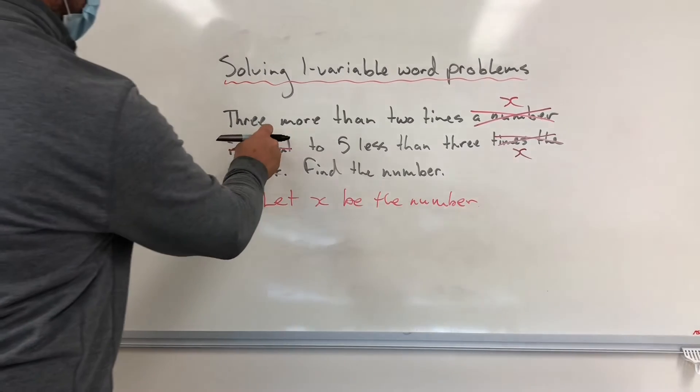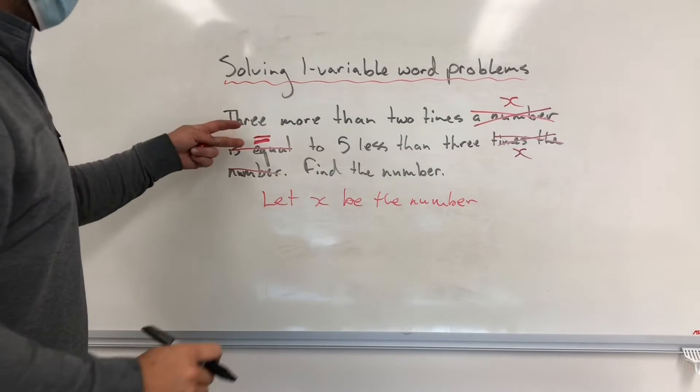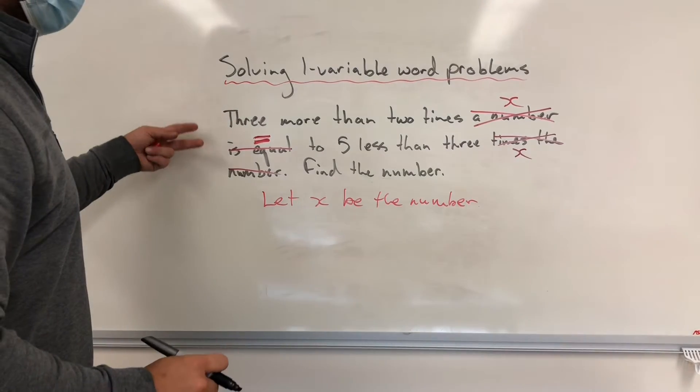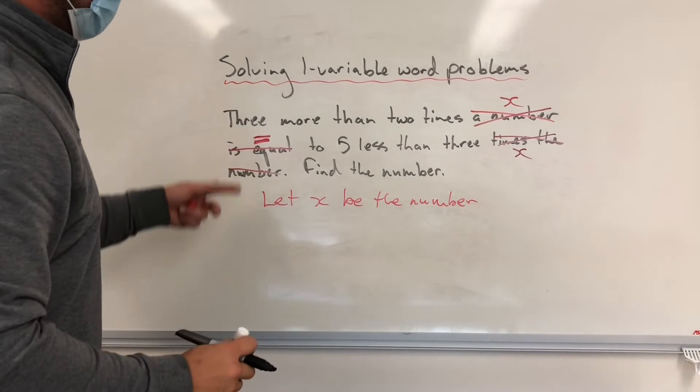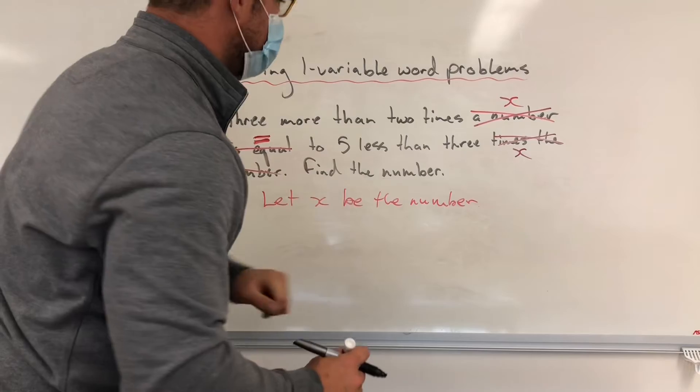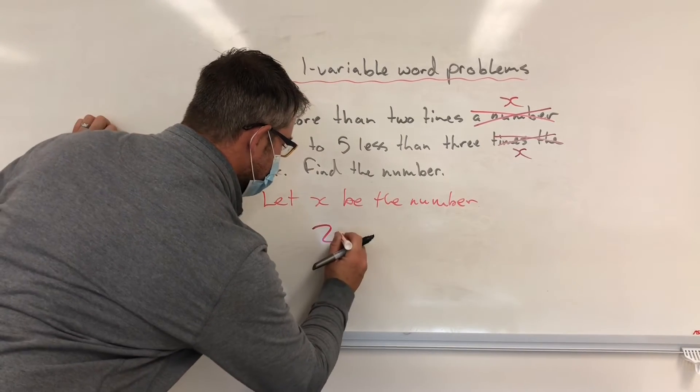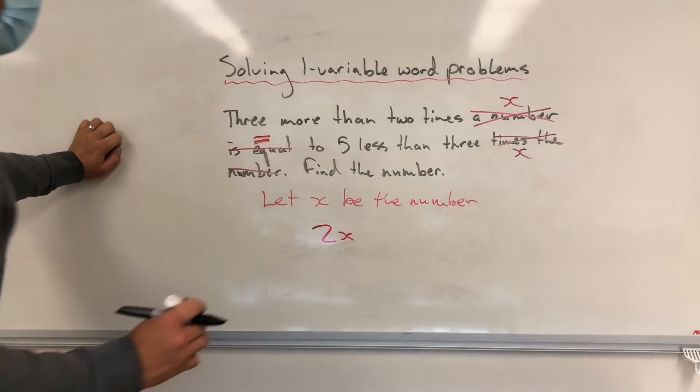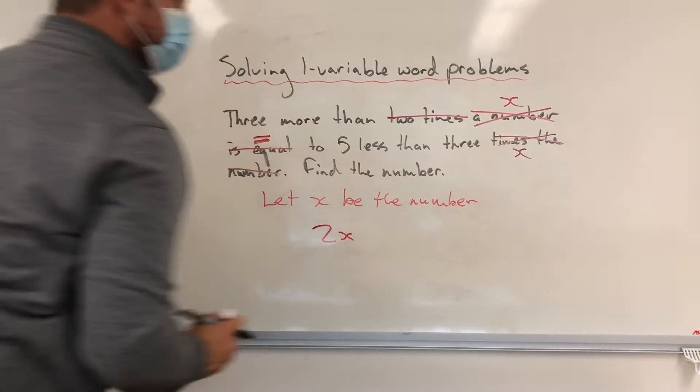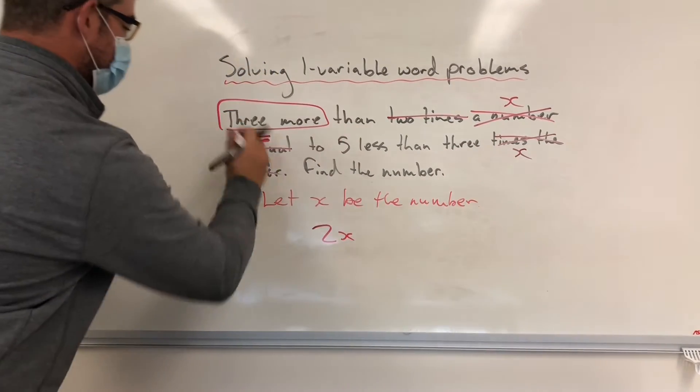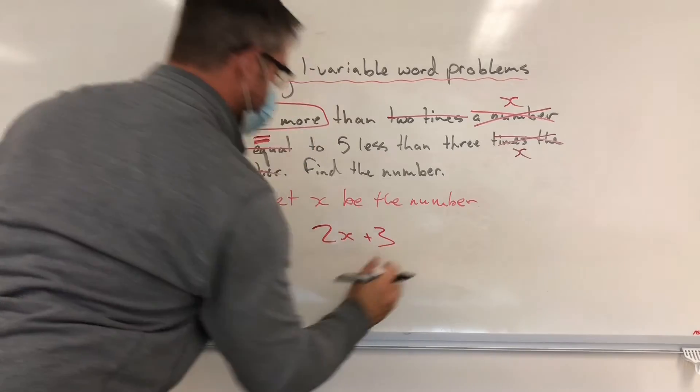I think where I have my equal sign, you can see that all of the information before the equal sign is going to be the left hand side. So three more than two times X. So two times X is simply 2X. That got rid of the two times part. And three more is 2X plus three.